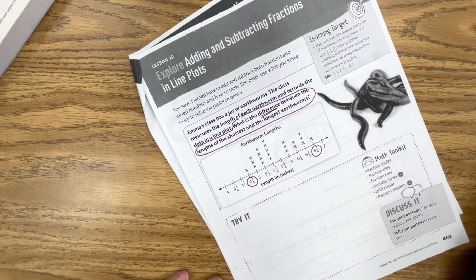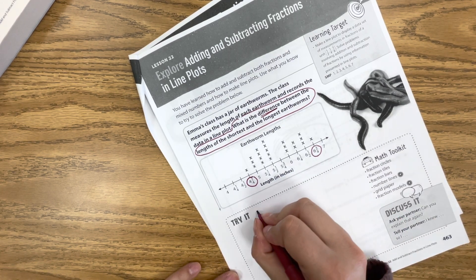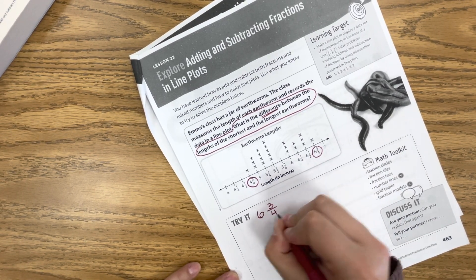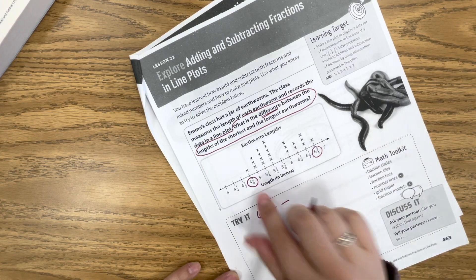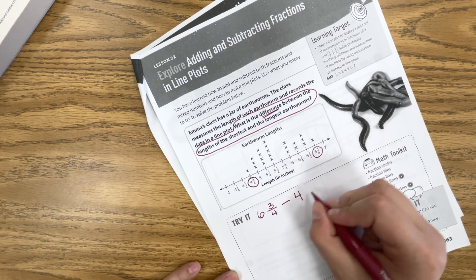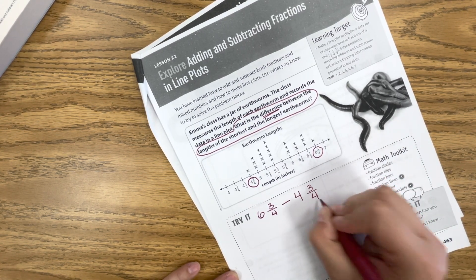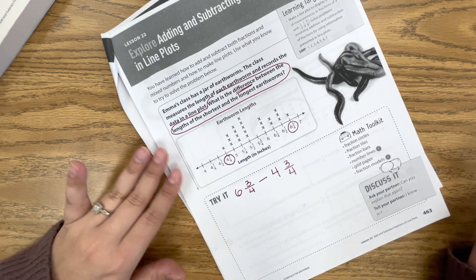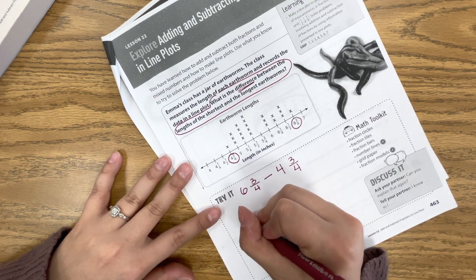So we have 6¾. We're going to put our bigger number first, just like in regular subtraction, and then we're going to subtract 4¾. Now there's two ways you could do this. You could also do the number line, but for us, I'm just going to make a model.